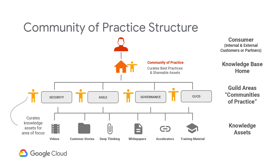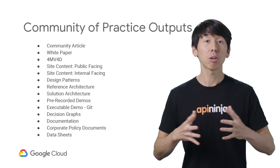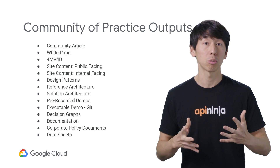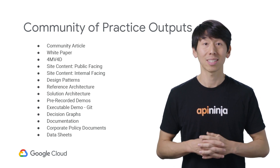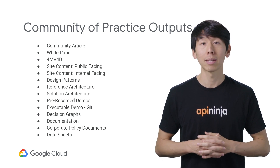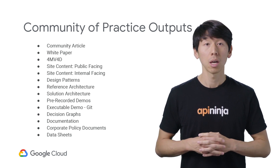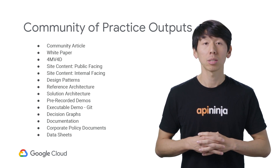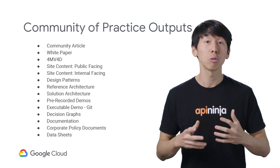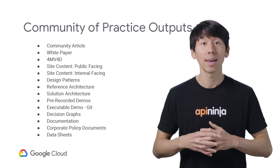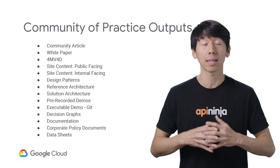That information can be in the form of a wide variety of assets, tools, or processes. The Community of Practice produces and shares this information, known as knowledge assets, to help consumers in various subjects and to help the organization digitally mature within their API program. Here are several examples of outputs that a Community of Practice may produce. These range from large research projects like white papers to small tools like executable demos that can be shared with consumers. The goal of the Community of Practice is to produce assets that will help the business digitally evolve and also be beneficial for the organization's API consumers.